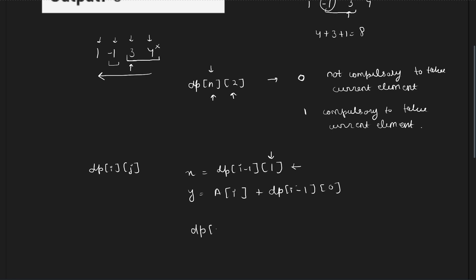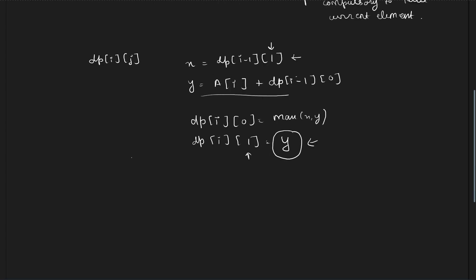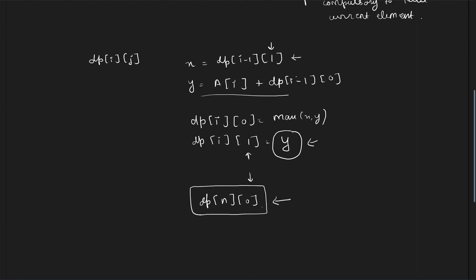If I am at dp[i][0], that means it is not compulsory to take the current element, so I take max of x and y. For dp[i][1], this will equal y because it is compulsory to take the current element. In the end, for the last index, dp[n][0] will be my answer, because for the last element it is not compulsory for me to take it — I can decide whether to take it or not.